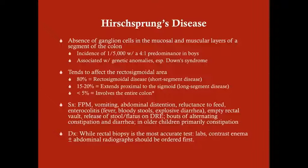For diagnosis, the most accurate test is a rectal biopsy. However, when you have a baby with constipation and abdominal distension, Hirschsprung's isn't the only thing in your differential. There are lots of things that can cause constipation in a neonate — duodenal atresia, colonic atresia, ileal atresia, meconium ileus — so the best first steps are contrast enema and abdominal radiographs.